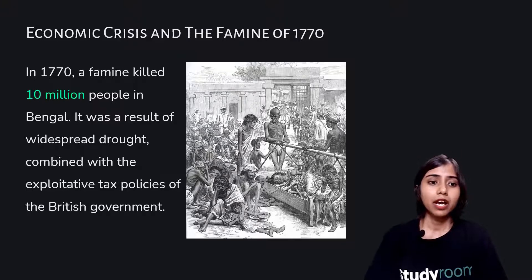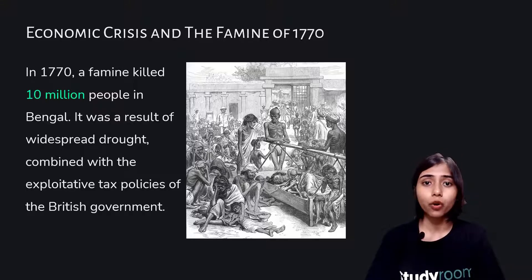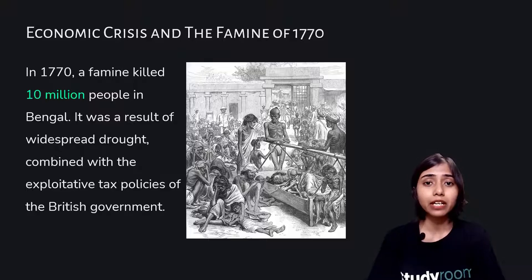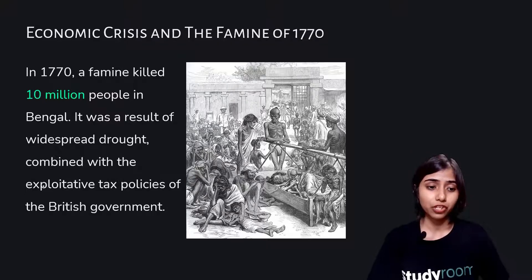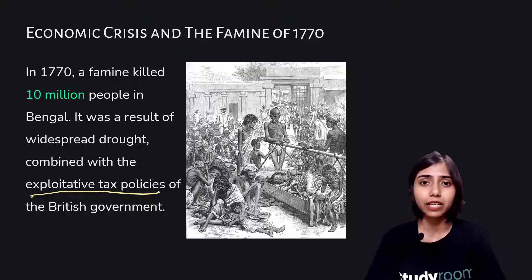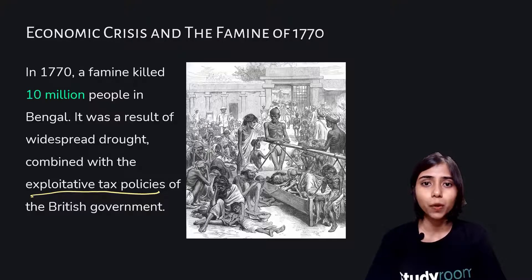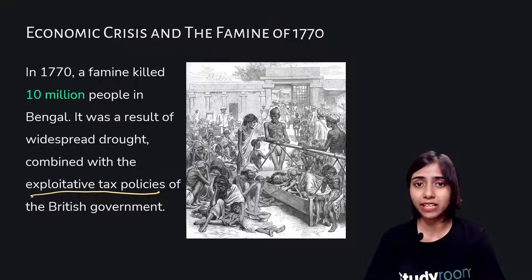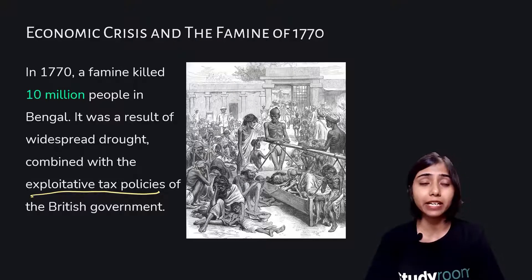In 1770, another problem struck the peasants and artisans. Their incomes had already been cut in half by this time, and the famine had a huge impact on them. This famine killed about 10 million people in Bengal. It was a result of widespread drought combined with the exploitative tax policies of the British. The peasants could not afford to pay those taxes, and the famine broke their backs entirely — they had nothing left to offer as revenue.